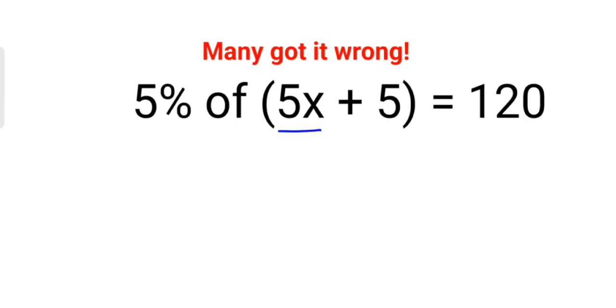So now in this case what you should be doing first is we will try to put everything in terms of its mathematical form. So now 5%, any number with a percentage sign ahead can be written as a fraction, means that number can be divided as 100. Of stands for multiplication. We have 5x plus 5.